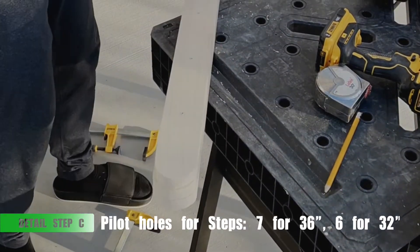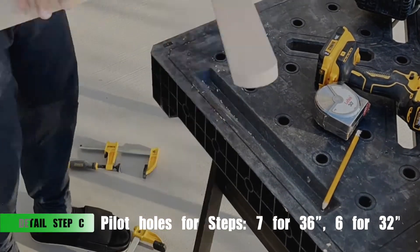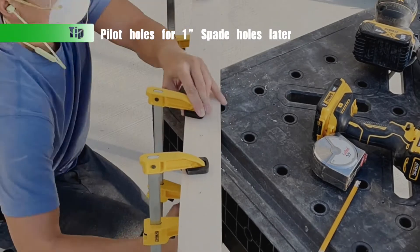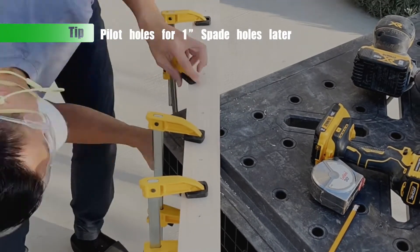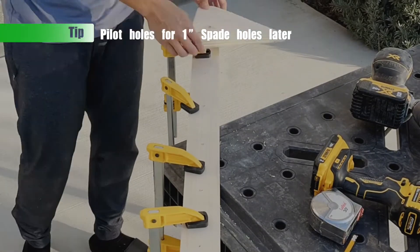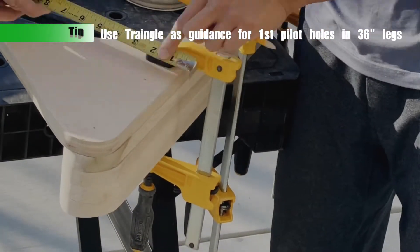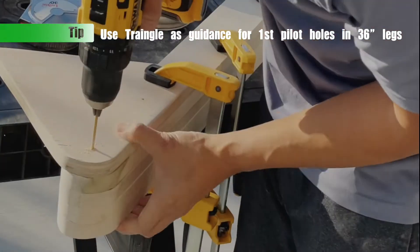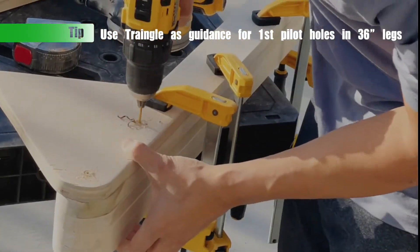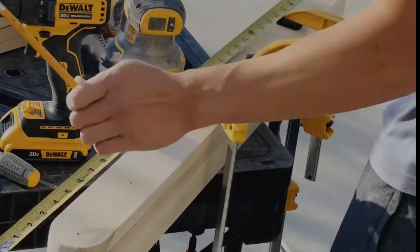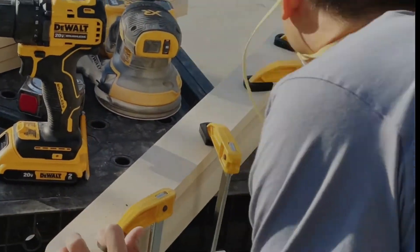Next detailed step, pilot holes for the dowels for the 36 inch and the 32 inch rails. For reference, we're going to be using those pilot holes to make 1 inch diameter holes for the dowels. You're first going to want to use the triangle that already has the pilot holes from the template and use those as the first two holes in the long rail. After that, each hole is about 5 inches and a quarter from each other.